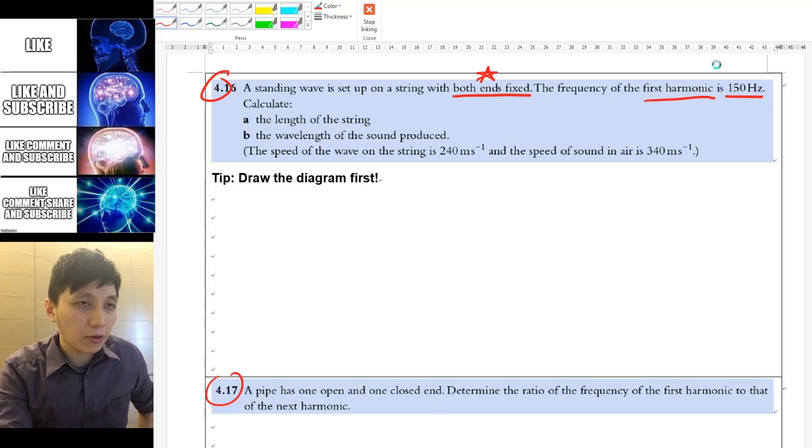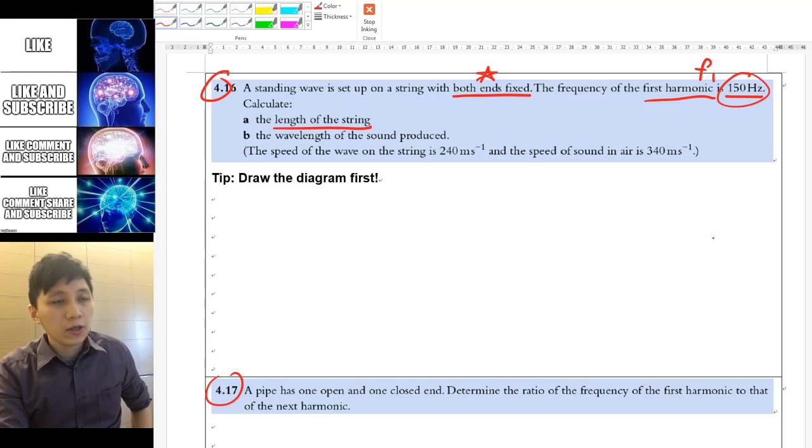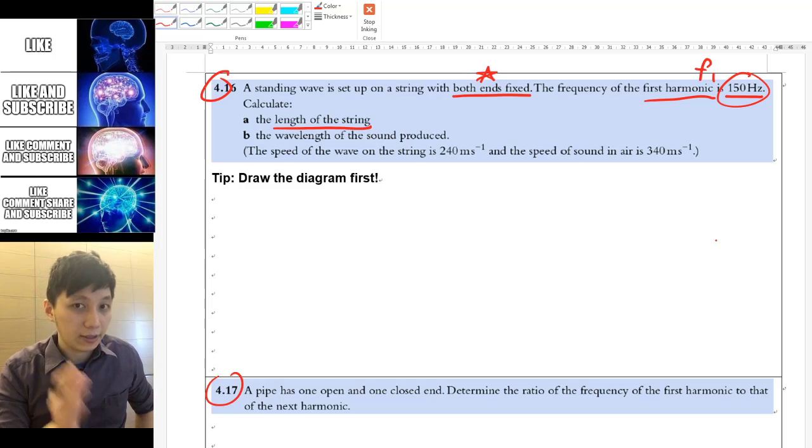It said the frequency for first harmonic, so I'll put F1, will be this one, and calculate the length of the string. So I think no matter what kind of standing wave question you're trying to calculate, you should draw the diagram first, and that will be very useful.